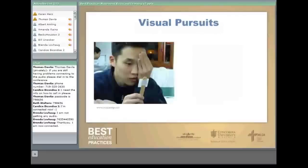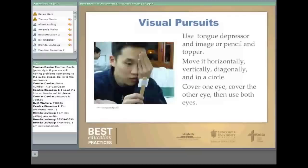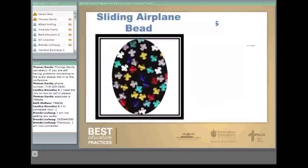Another activity is visual pursuits. You can use a tongue depressor with an image on top, a pencil with a topper, or a popsicle stick with a sticker. The student moves the stick horizontally, vertically, diagonally, and in a circle — covering one eye, then the other, or using both eyes, keeping the head still. This is really good to do with a partner, who moves the stick while the other person practices tracking.